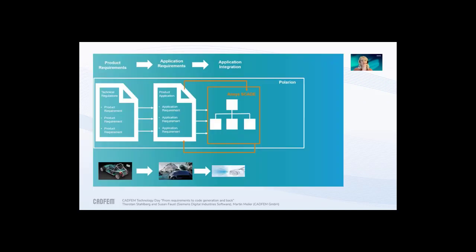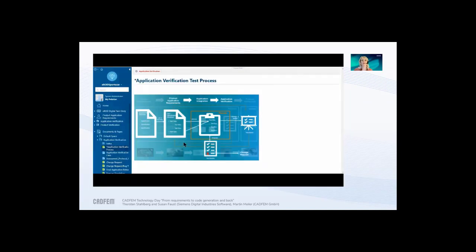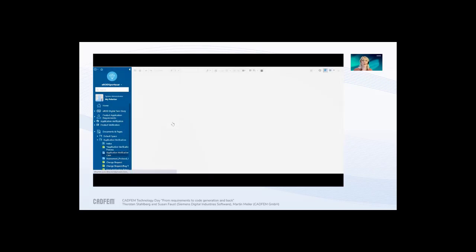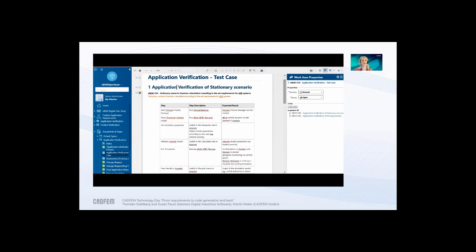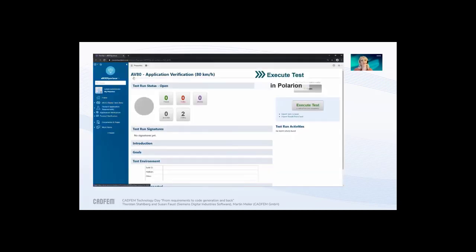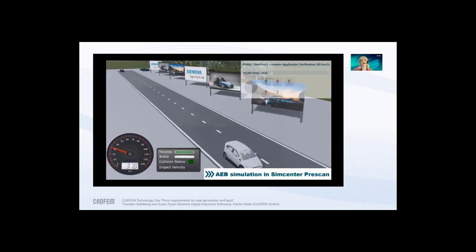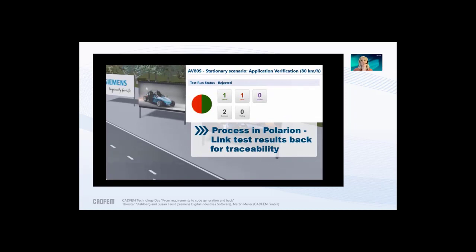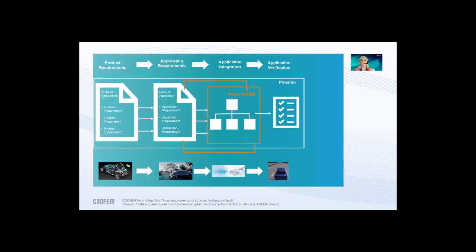Based on these three essential steps, we also created in Polarion the full application verification test process — documenting test cases for our E-Rod software configuration, then creating a dedicated test run. This test run was executed automatically in a simulation-based verification test process, with results displayed back in Polarion for full traceability. We then completed the final verification, everything checked out, and the E-Rod is now ready for the road.